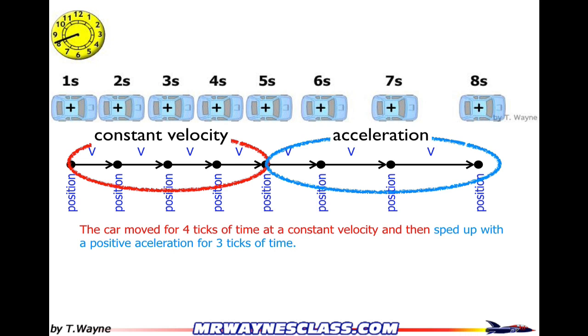the car moved for four ticks of time at a constant velocity, that's the red, and then sped up at a positive acceleration for three ticks of time. So in my description, I'm telling something about the time and something about the motion, telling its constant velocity. And even if it's positive or negative, I can add that component to it as well, like I did with the acceleration.